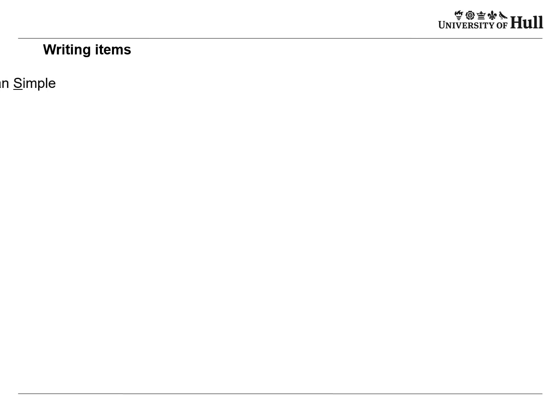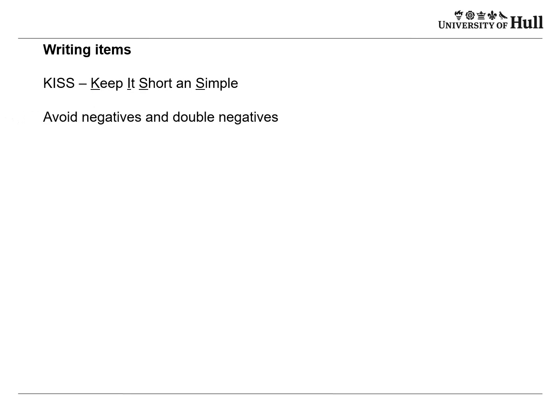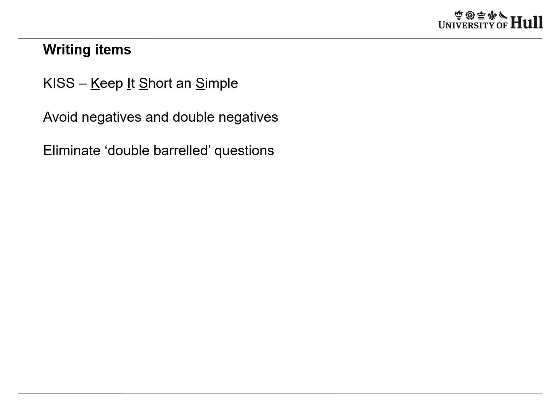When writing items, keep it short and simple. Avoid negatives and double negatives — make questions straightforward and easy to answer. Try not to have double-barrelled questions: if you ask 'do you like living in Europe and studying at such and such university?' and someone says no, you don't know which part they're objecting to. Double-barrelled questions are remarkably difficult to eliminate — read them all over very carefully, get other people to read them, and pilot the questionnaire to make sure you've got rid of anything ambiguous.